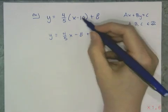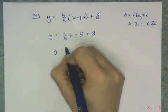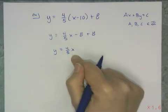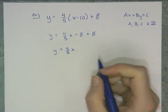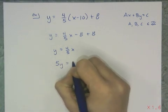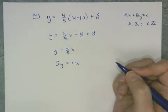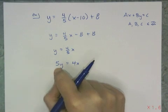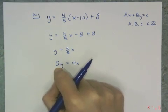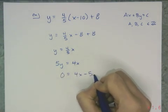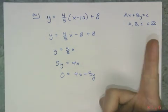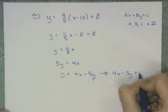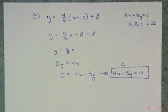Multiplying 4/5 times 10 gives 40 over 5, which is 8, so those plus 8 and minus 8 cancel, leaving y equals 4/5 x. It's almost standard form, but there's a fraction. To get rid of it, use the multiplication property of equality and multiply both sides by 5, giving 5y equals 4x. Now we have integers, but x and y are on opposite sides. Use the subtraction property of equality and subtract 5y from both sides to get 0 equals 4x minus 5y. Then applying the symmetric property of equality gives 4x minus 5y equals 0, which is the equation of the line in standard form.